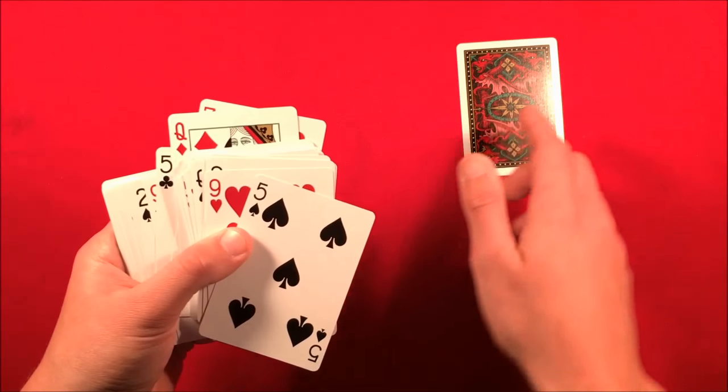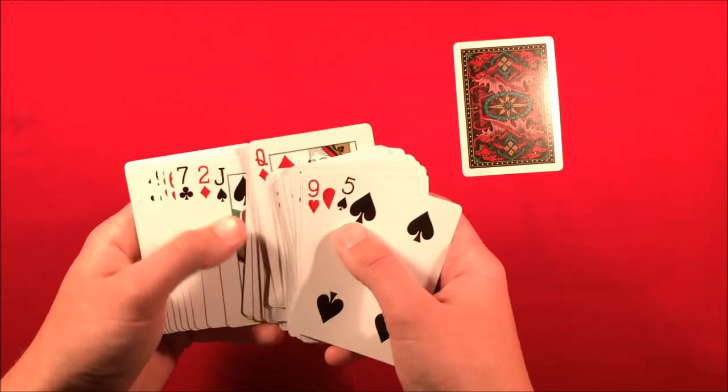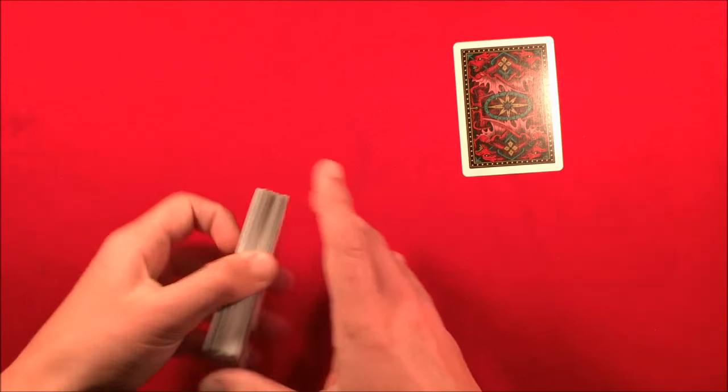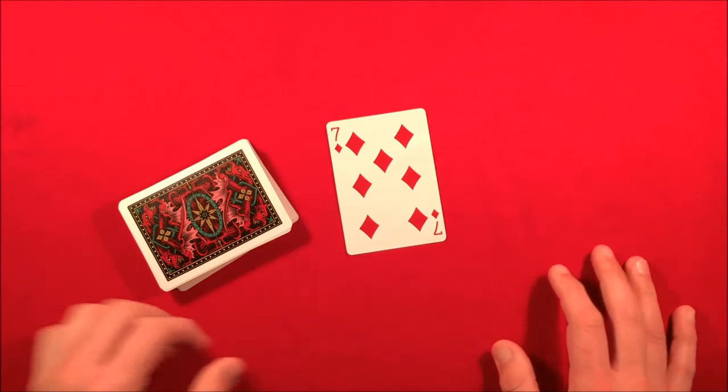So their card here, the seven of hearts—the card on the table you now know is the seven of diamonds. And you continue to go through the pile, put it on the table, you can flip it over and show them their card is the seven of diamonds.